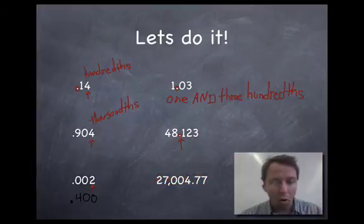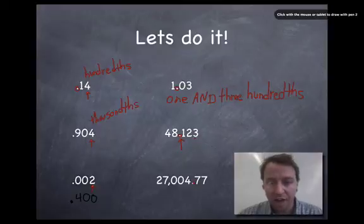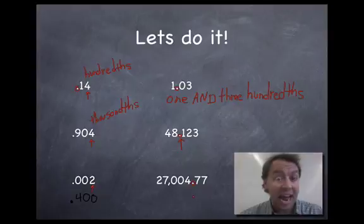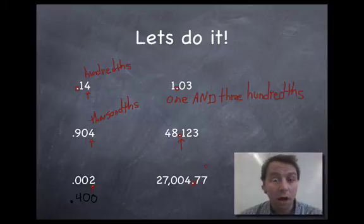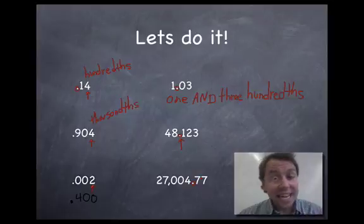I put a really big whole number on this one. All right. I found my decimal point. I'm going to read each side and separate it with an and. Twenty-seven thousand four and seventy-seven hundredths. Did you get it? If you didn't get it, back it up and watch this section again. Make sure that you really know what you're doing before we move forward.